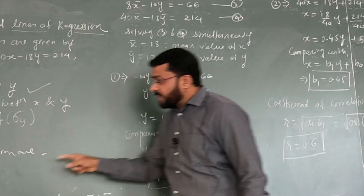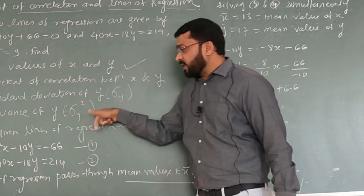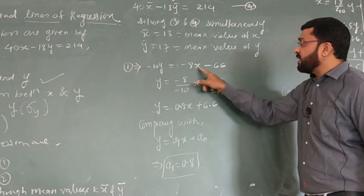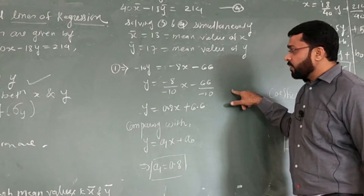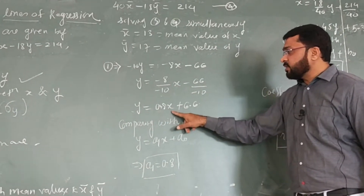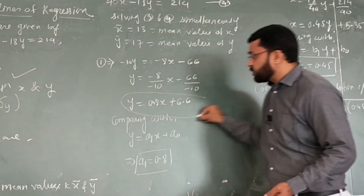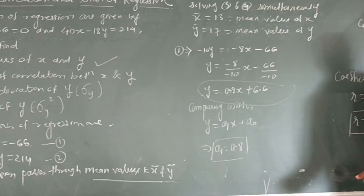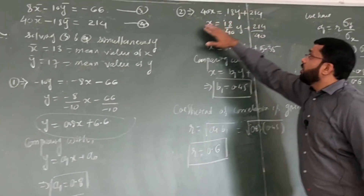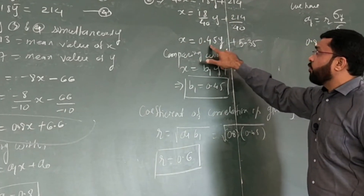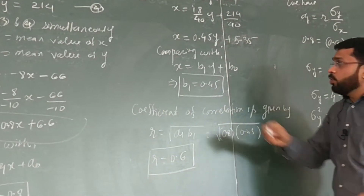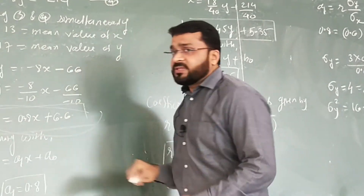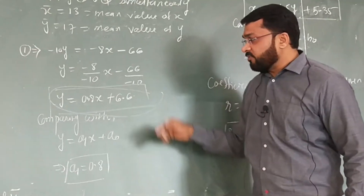To find the coefficient of correlation, we write the regression line y-on-x in standard form: y equals 0.8x plus 6.6. For the second line, we express x in terms of y from 40x equals 18y plus 214. Dividing by 40 gives x equals 0.45y plus 5.35, expressing x in terms of y.